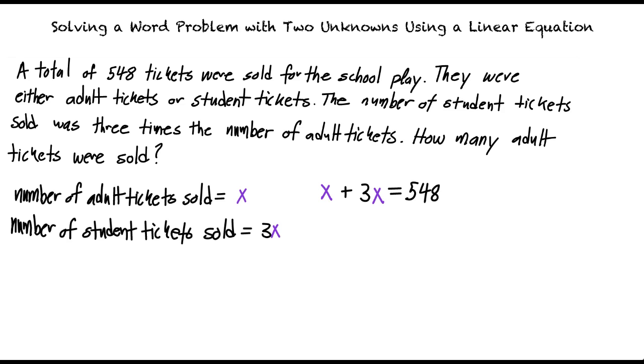Adding x and 3x together and dividing both sides of the equation by 4, we can find that x is equal to 137. So therefore, the amount of adult tickets sold is 137.